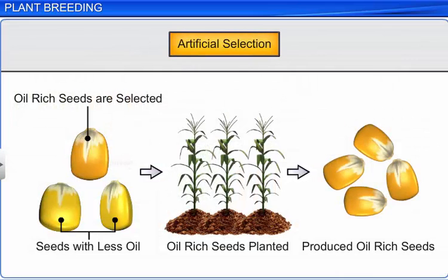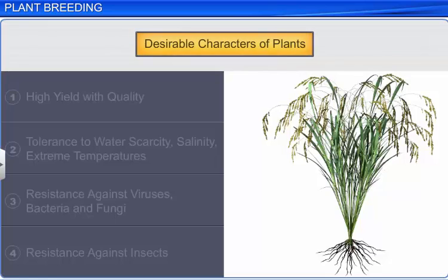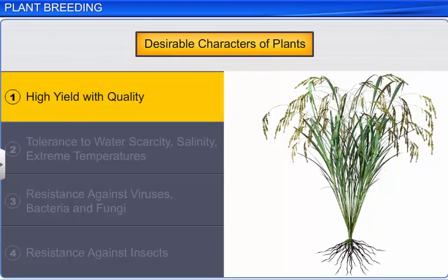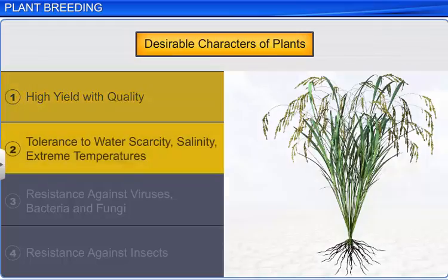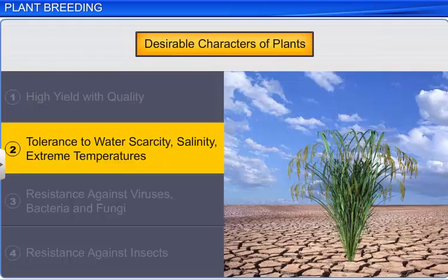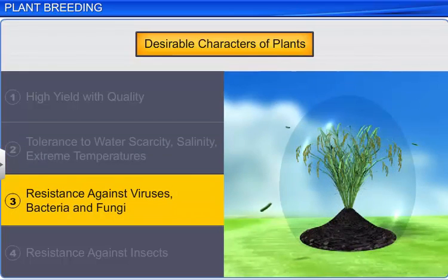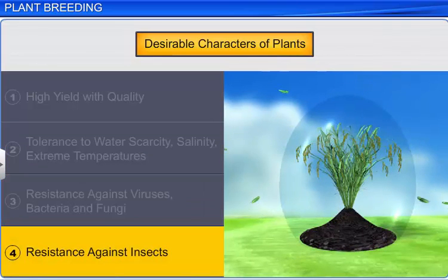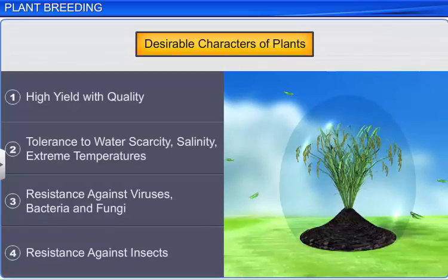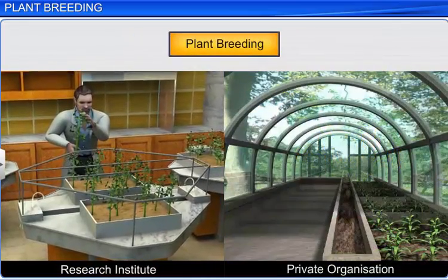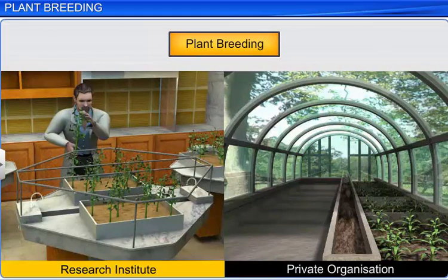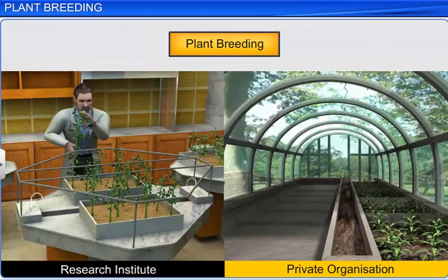The desirable characters of plants generated by plant breeding include high yield with quality, tolerance to different types of environmental stress, resistance to microbes and pests. Plant breeding is commonly carried out in government research institutes and some private organizations, and involves several steps.